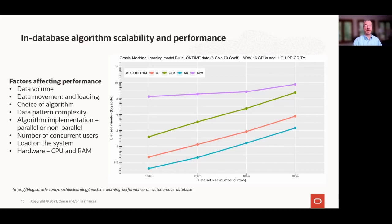Many factors affect machine learning performance beyond data volume: algorithm choice, number of concurrent users, load on the system, and available hardware. The combination of in-database parallel computation and no data movement shows essentially linear scalability across multiple in-database classification algorithms with data ranging from 100 million to 800 million rows. At the high end, we build a Naive Bayes model on 800 million rows in just over 2 minutes and an SVM model in under 16 minutes.